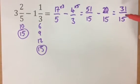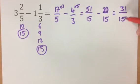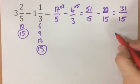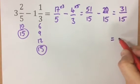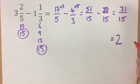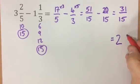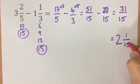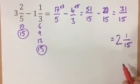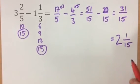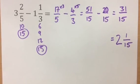Now you can change that into a mixed number. So how many 15s fit into 31? Well it's 2 — 2 15s are 30 — so there is 1 15th left over, and that's your answer: 2 and 1 15th.